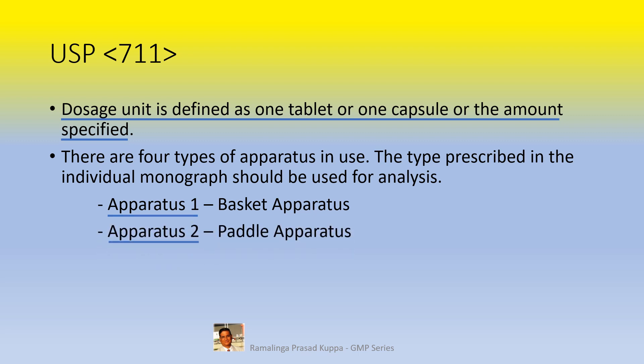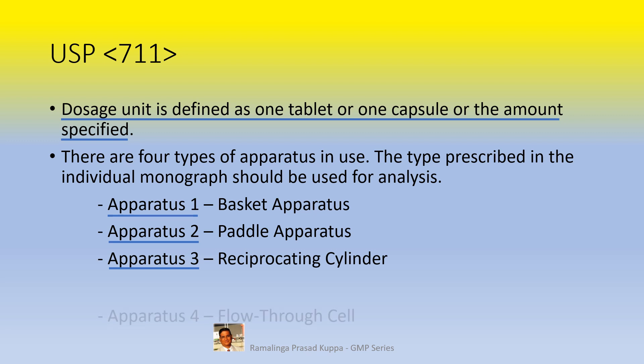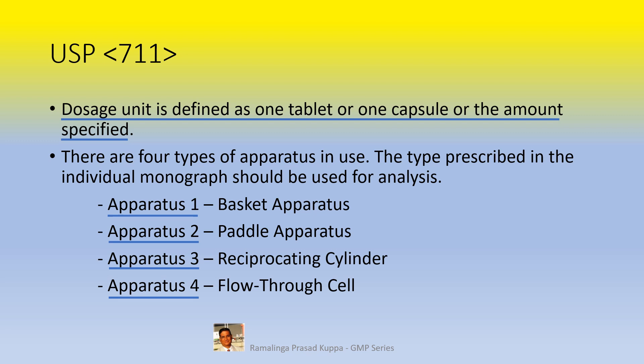Apparatus 2 is the paddle apparatus. This method is used for many dosage forms which sink to the bottom of the vessel without any problem. Apparatus 3 is the reciprocating cylinder. It is utilized for drug release profiling from extended release products and can quickly and easily expose products to mechanical and physiochemical conditions which may influence the release of the product. Apparatus 4 is the flow through cell, used for special purposes like lipophilic forms, suppositories, suspensions, etc.